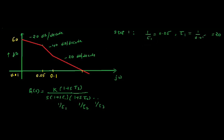The −40 dB/decade slope continues up to ω = 0.1. After that, the slope returns to −20 dB/decade, meaning +20 dB/decade is added — this indicates a zero at this point. Since the zero goes in the numerator, we need to find tau3 (there is no tau2 in this example). So 1/tau3 = 0.1, giving tau3 = 10.